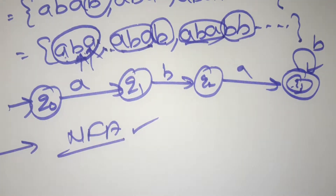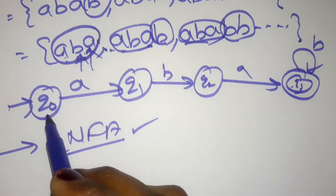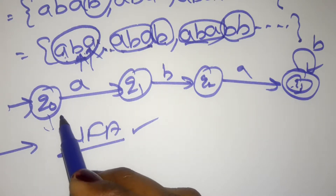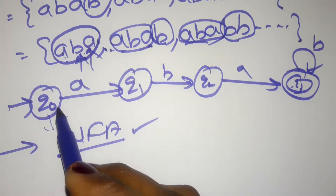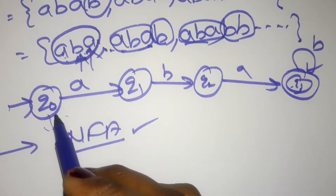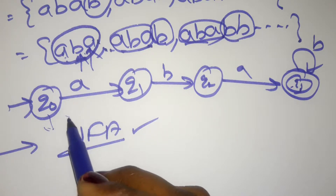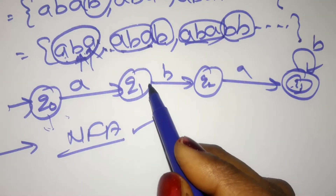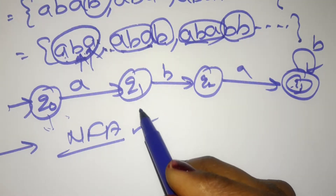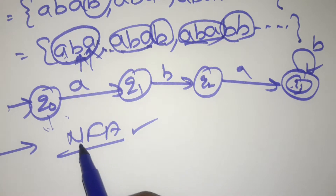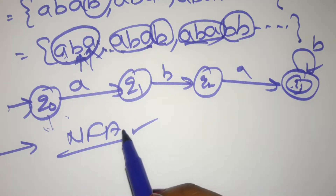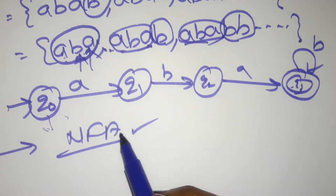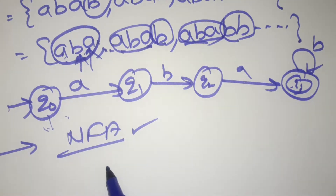Designing an NFA is very easy compared to a DFA. In an NFA, you do not need to specify transitions for every state and input symbol — you don't need to mention 'b' here or 'a' there for every state. That is the advantage of an NFA.